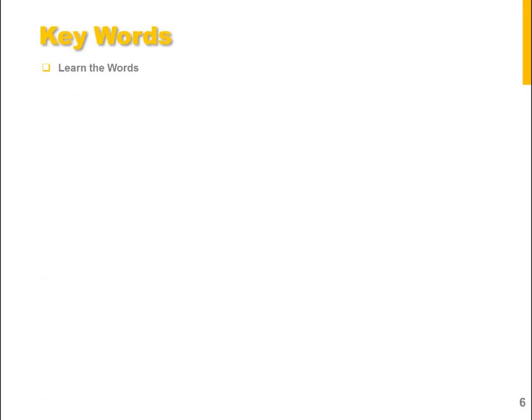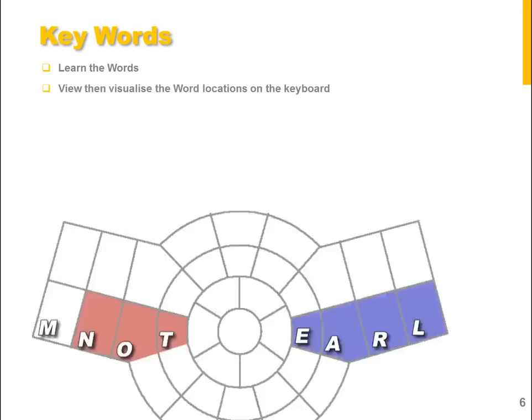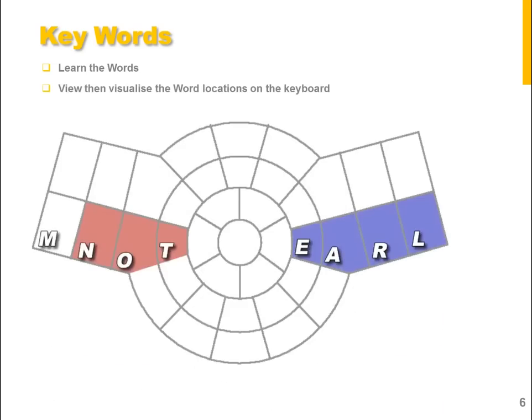Now moving on to your second set of letters using keywords. There are two keywords. Again, learn the words, view then visualize their location on the keyboard. Notice that they run in a line along the lower wings of the B-Radar keyboard. So you have M, not, Earl — that's M, not, Earl.